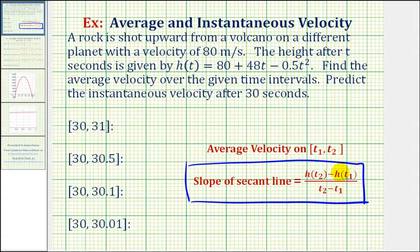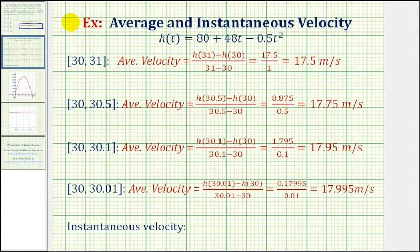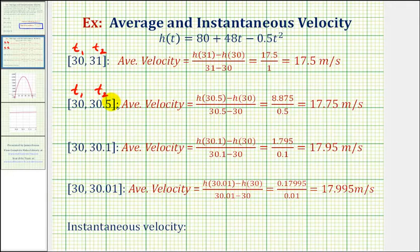Because of this, I've already set most of it up. For the first interval, t₁ equals 30 and t₂ equals 31. In the second interval, t₁ equals 30 and t₂ equals 30.5. Then t₁ equals 30 and t₂ equals 30.1, and finally t₁ equals 30 and t₂ equals 30.01.